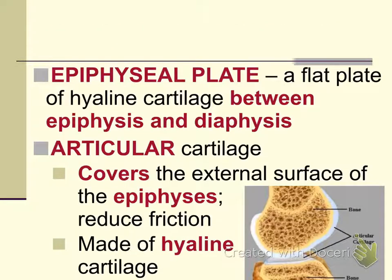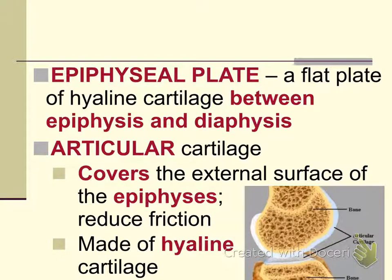The epiphysial plate is the junction between the diaphysis and the epiphysis. It can also be called the epiphysial disc or epiphysial line, depending on the age of the bone. When a child is still growing, the epiphysial plate remains open, meaning the diaphysis and epiphyses are not touching — there is a band of cartilage between them. As the child grows, it is replaced with bone, and eventually the diaphysis and epiphyses fuse together, leaving only a thin line.